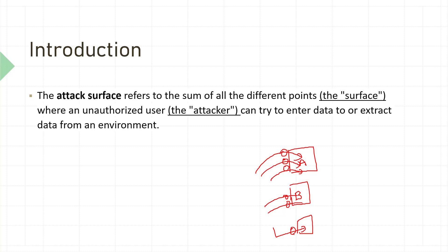The simple logic is: if you increase functionality, you also increase the attack surface to exploit. If you decrease functionality, you decrease the attack surface. It's like wearing a mask for extra protection — if you don't cover up, you expose everything and invite opportunity for attack.